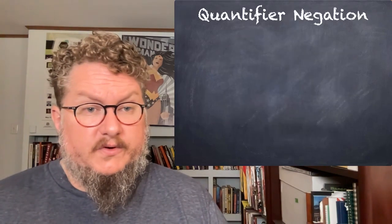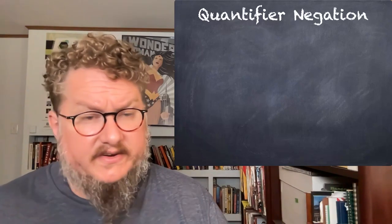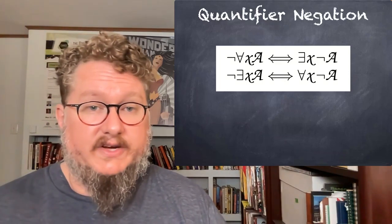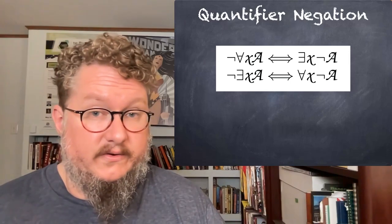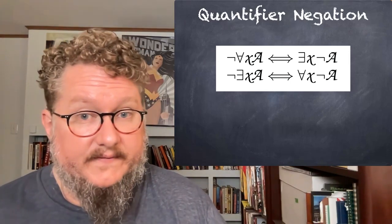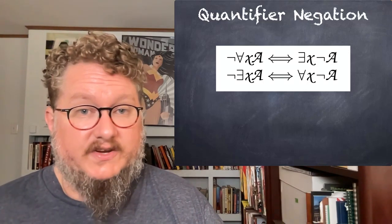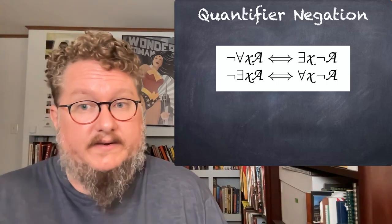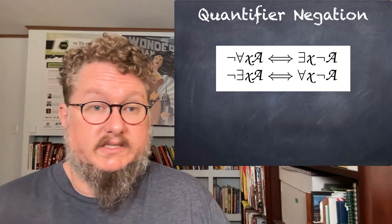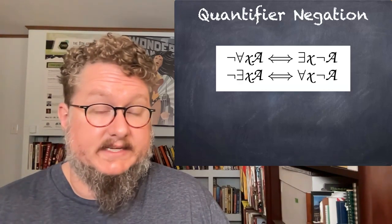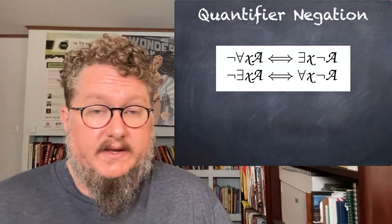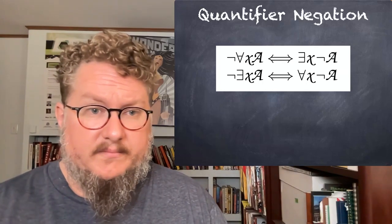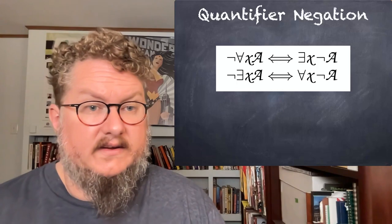We also get a new replacement rule for QL, which we call quantifier negation. This just depends on the way the two quantifiers are defined in relation to one another. The negation of a universal is equivalent to the existential of a negation, and vice versa. So I can move the negation in or out of the quantifier, and it flips from being universal to existential. This is a replacement rule, so we can apply it to partial sentences — to parts of our lines — whereas all of the existential and universal introduction and elimination rules have to apply to the whole sentence, with the quantifier as the main connective.